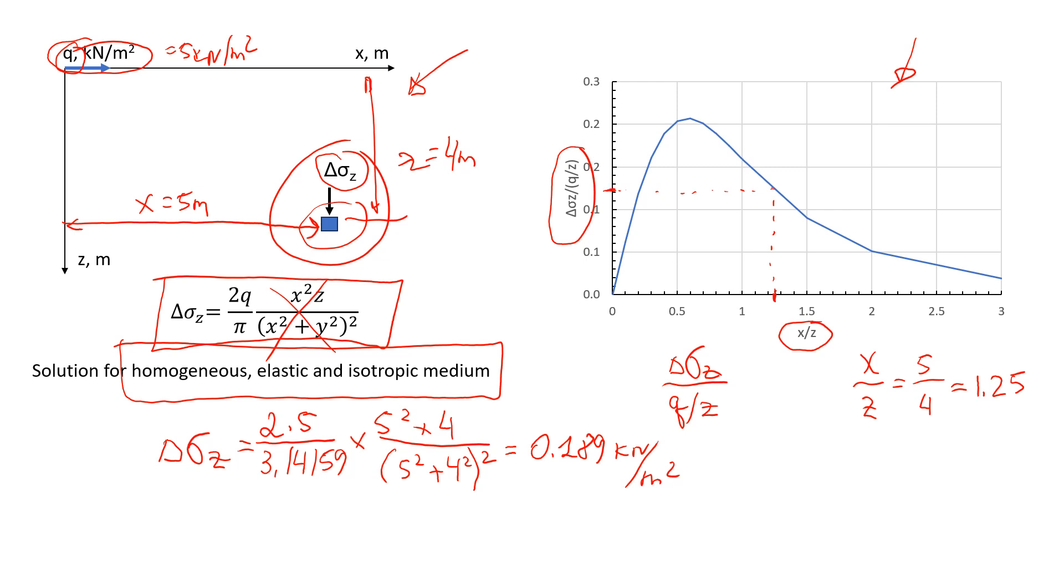So 1, 2, 4. So according to my estimation, it should be 0.15. 1.5. Approximately 0.15. So we can now rewrite that change in the vertical stress. Here we have q, which is 5. Z, we have 4 meters. And this should be equal to 0.15.